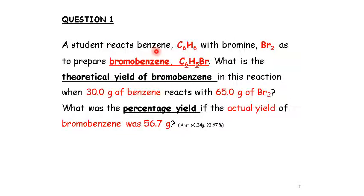A student reacts benzene with bromine to prepare bromobenzene. So based on this question, the equation is not given. So we must know how to write the equation. From here we know is C6H6 plus Br2 produces C6H5Br. Then what is the theoretical yield of bromobenzene in this reaction? So question 1 is about theoretical yield. When 30g of benzene reacts with 65g of bromine, mass of this reactant and this reactant is given, meaning that the next step after equation is we need to calculate the number of moles for both reactants.